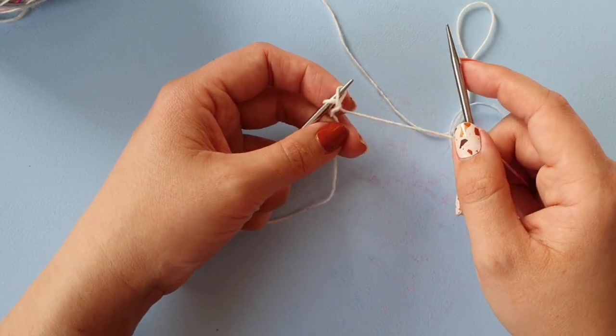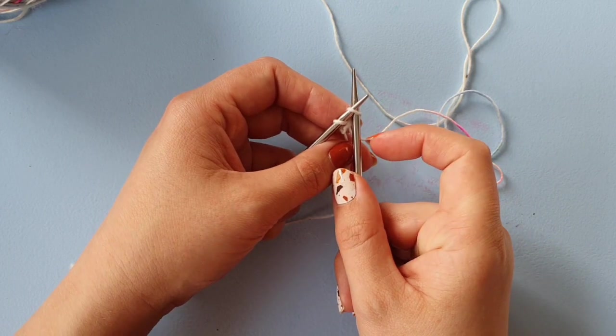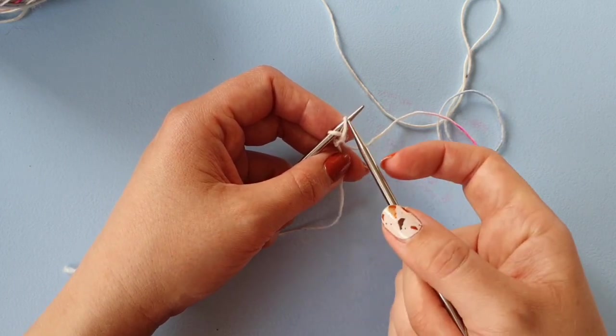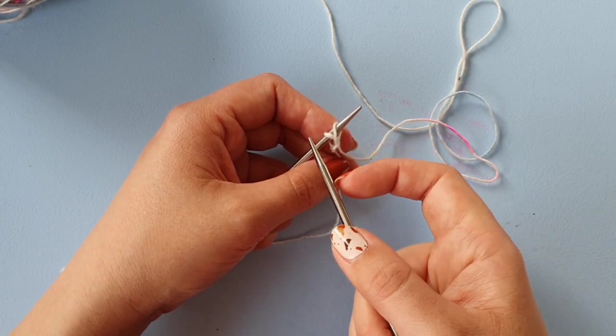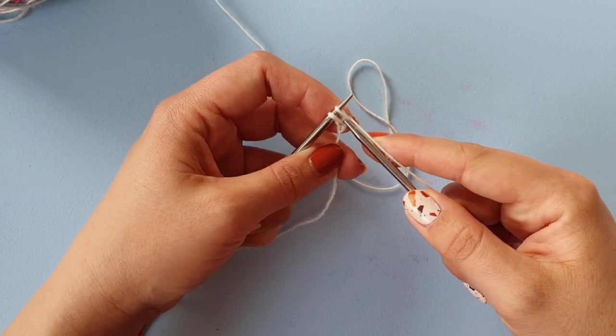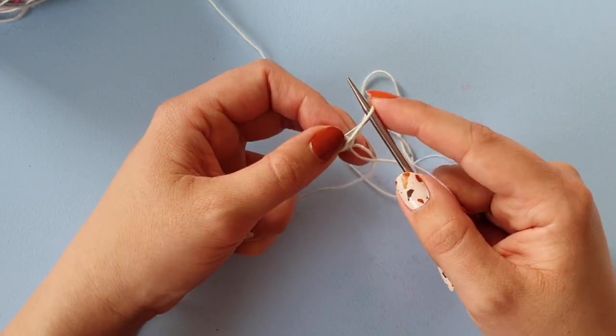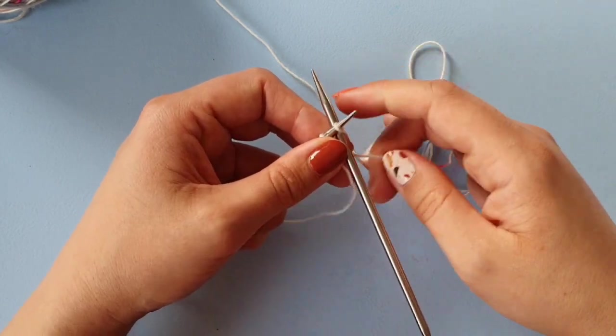And then there are two ways of creating new stitches. You can insert into the new stitch or you can insert between the current and the previous stitch, and I think that creates a more stable cast-on edge.